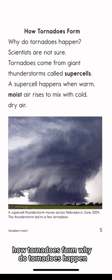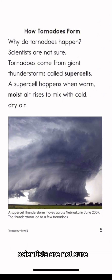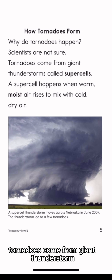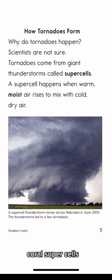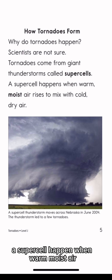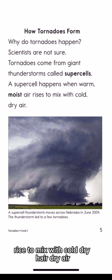How tornadoes form. Why do tornadoes happen? Scientists are not sure. Tornadoes come from giant thunderstorms called supercells. A supercell happens when warm, moist air rises to mix with cold, dry air.